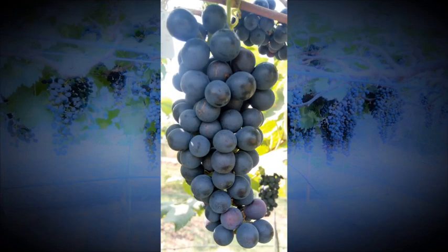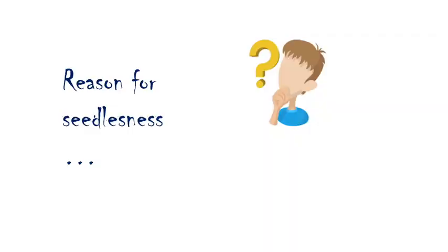In our study, we have produced a seedless grape variety by two techniques: a physical mutagen and a chemical mutagen. As a physical mutagen, we used gamma irradiation at different electron volts, and as a chemical mutagen, ethyl methyl sulfonate at different concentrations. Our aim was to find out whether seedless grape formation in our mutant occurs via Parthenocarpy or Stenospermocarpy.